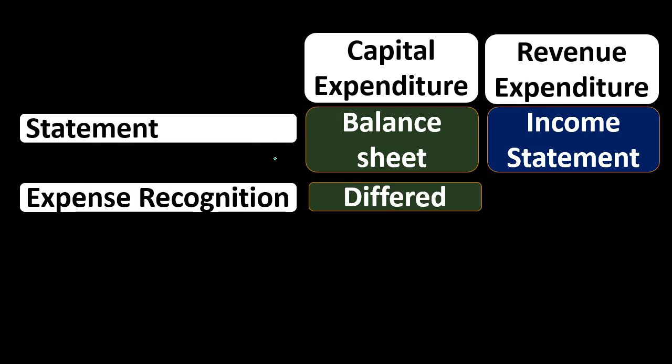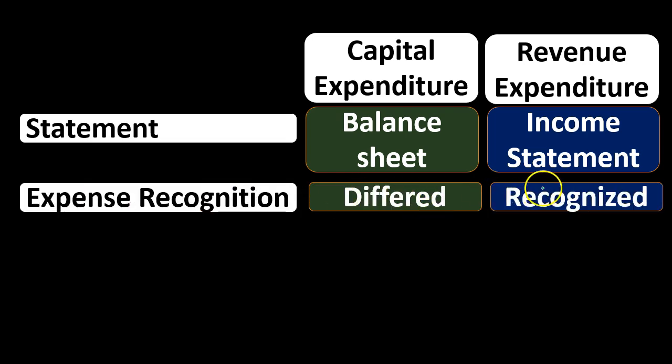Expense recognition is deferred if we're talking about a capital expenditure, meaning we're not going to write off the expense at the point in time we have the expenditure. If we put a whole new engine into the forklift, we put it on the books as an asset and then depreciate it over its useful life, deferring the expense so it lowers net income in later years rather than year one. Whereas if it's a normal repair, we write it off this year on the income statement, recognizing it and decreasing net income.